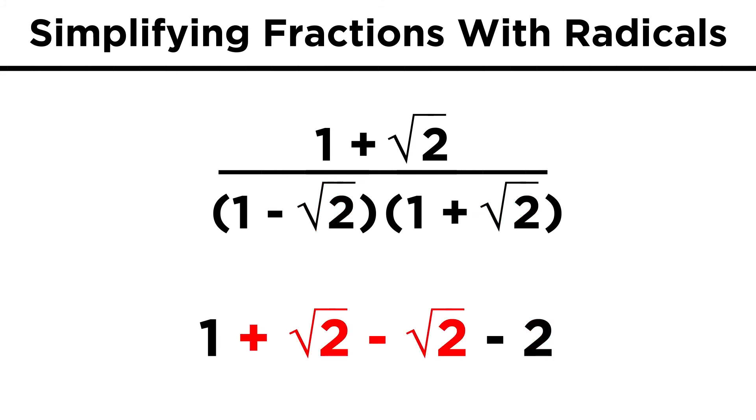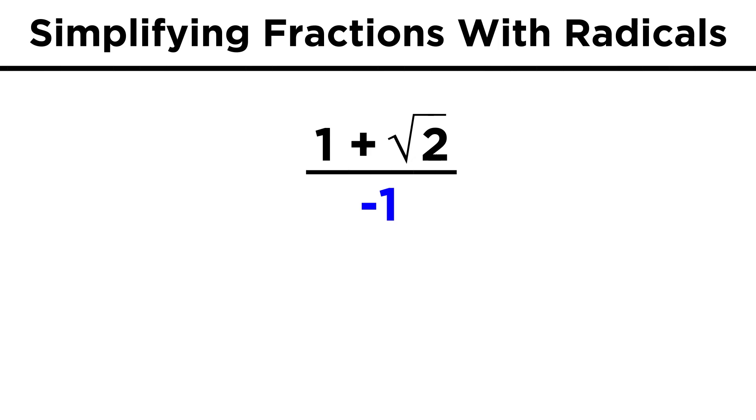The reason we do this is so that the terms with radicals cancel, and we are left with one minus two, or negative one. Dividing by negative one is the same as multiplying by negative one, so we can distribute the negative sign across the numerator, and we are left with negative one minus root two.